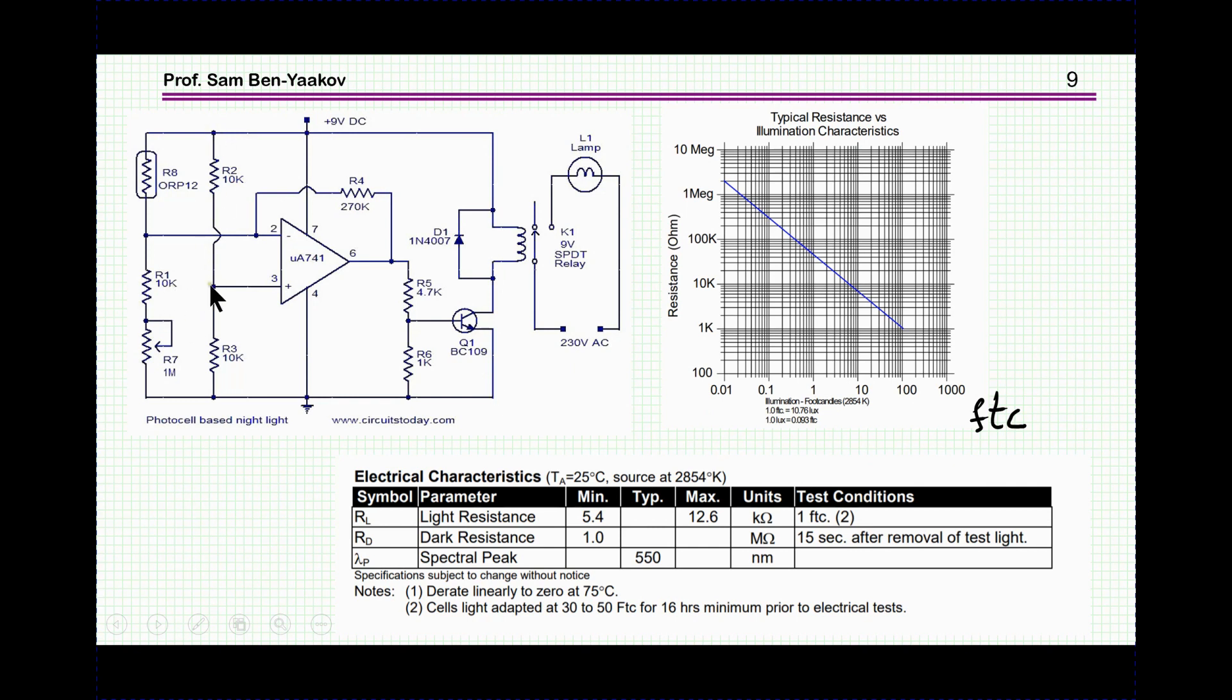So let's have a look a little bit deeper here. So here we have this divider. The trip point is halfway, and let's say it says here that light resistance at one foot candle, which is fairly low light, is about say 10 kilohm. So let's say that this potentiometer would be 10k. So when the ambient will be one foot candle, it'll trip.